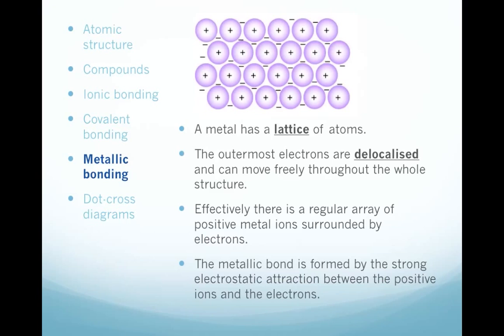So that effectively gives us a sort of regular pattern laid out of positive metal ions. And they're surrounded by what's sometimes referred to as a sea of electrons that can move about. And this so-called metallic bond is formed by the strong force of electrostatic attraction, the positive ions and the negative electrons. And, of course, it's the reason why metals are very good conductors. Because these electrons can move around easily, if you apply an electric field, they'll move in one direction or another. But, of course, that's a topic of a different study.